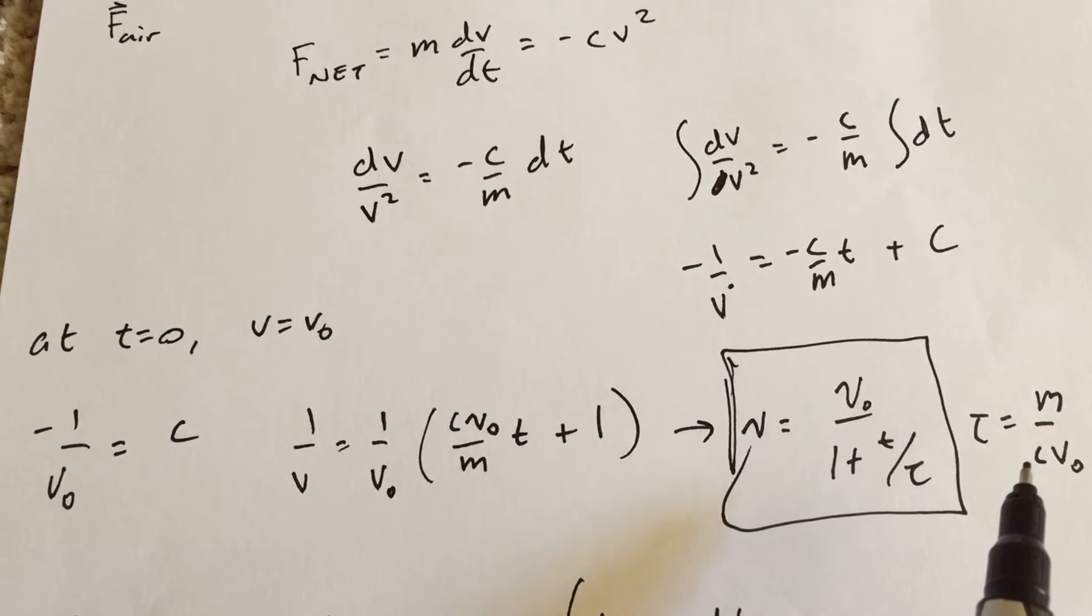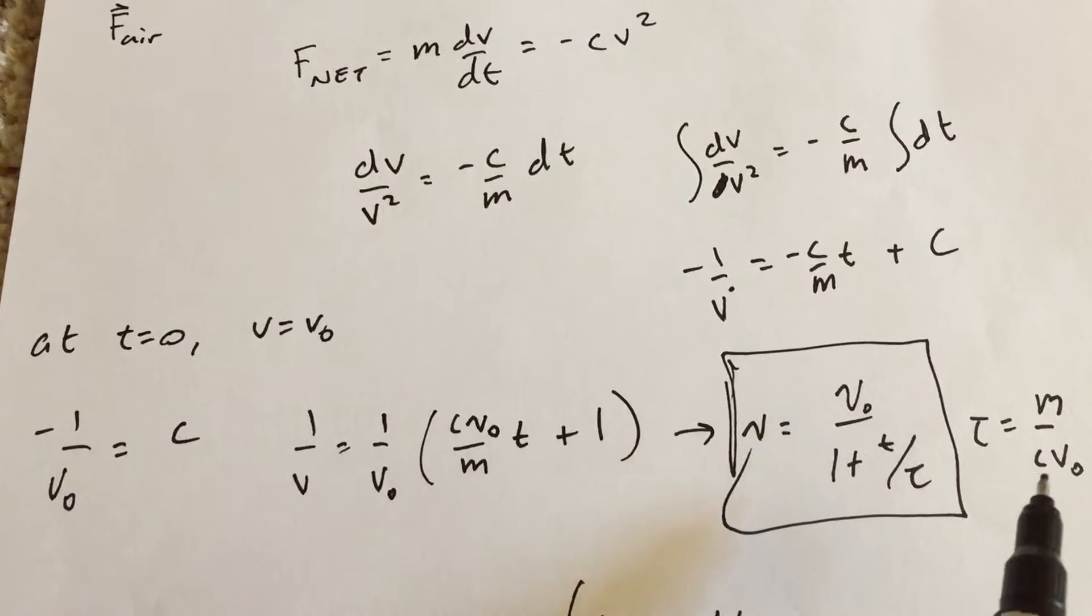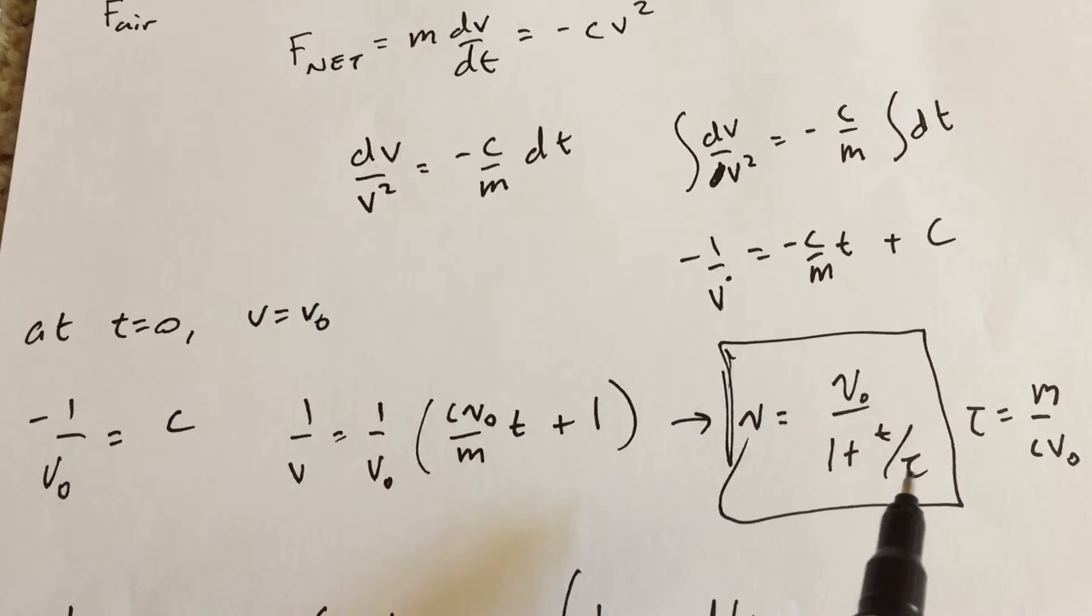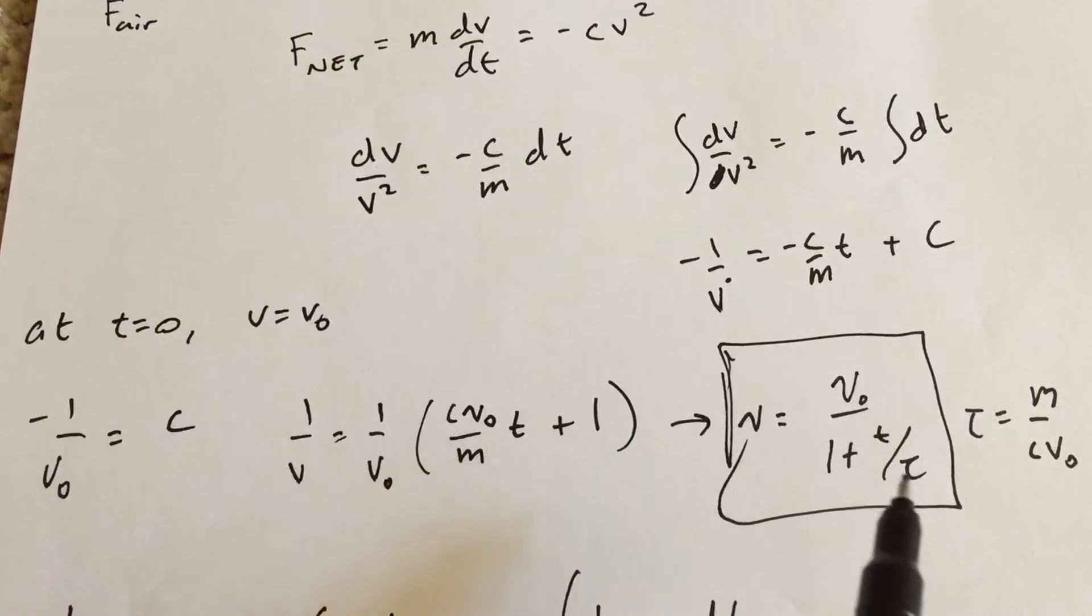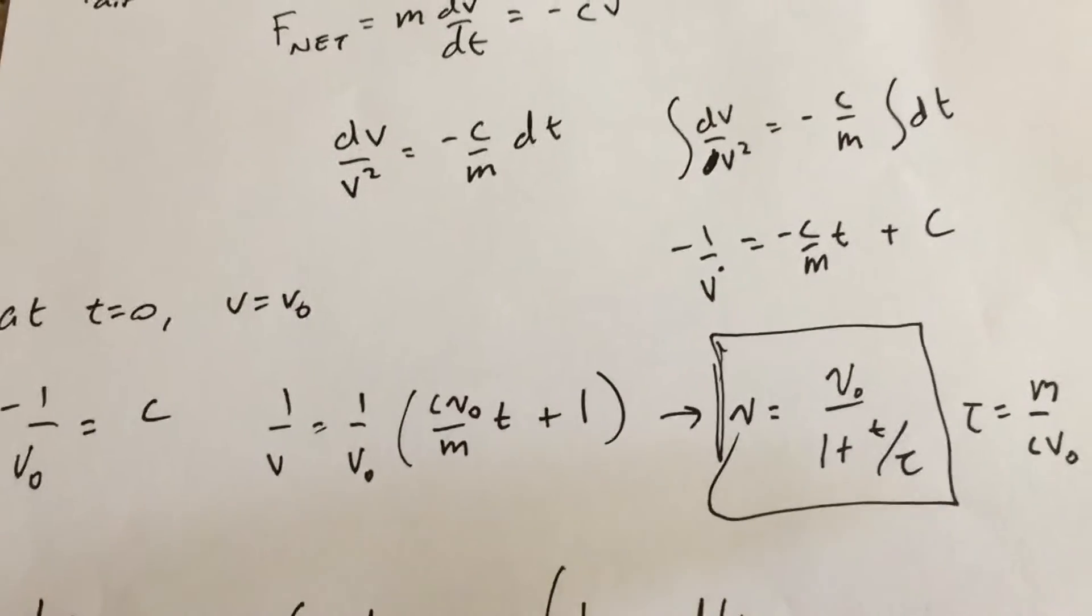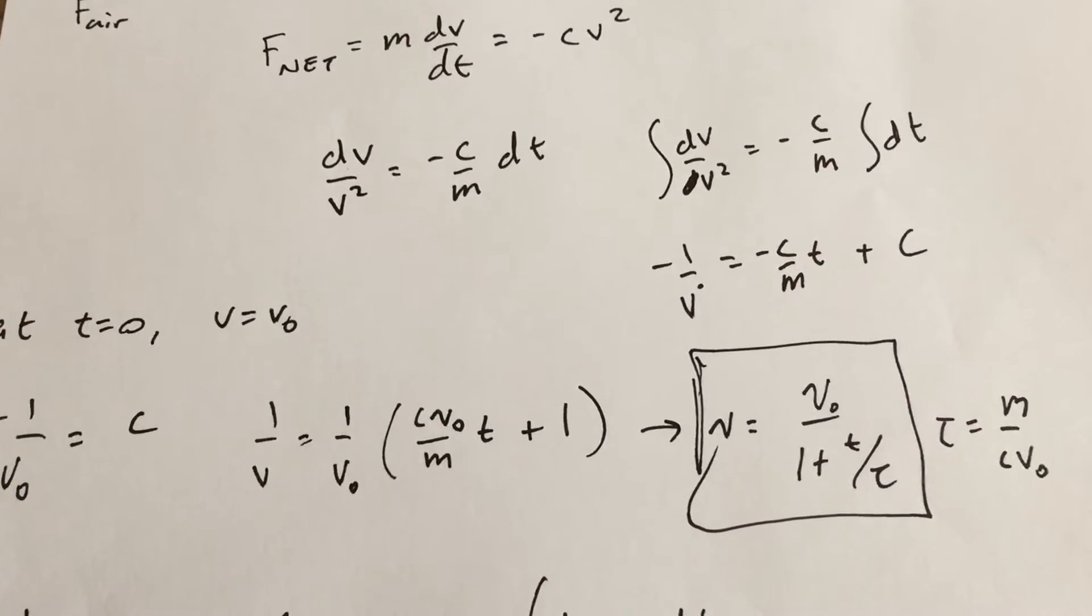m over c over v₀. And why do we divide by that? Because this is like a time divided by a time, and this is a unitless thing on the bottom. So that's going to make more sense that way. Okay, so that's my definition of velocity. Now I need to find the position.